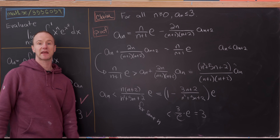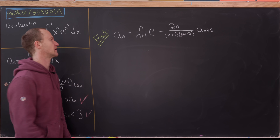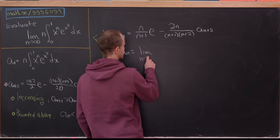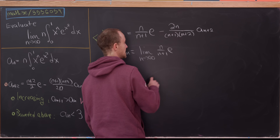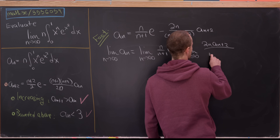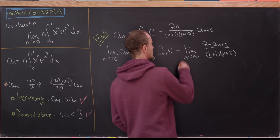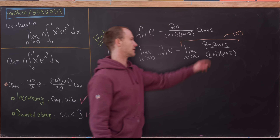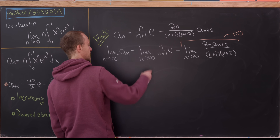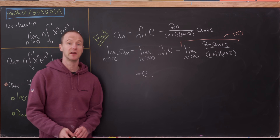We've proven the sequence has a limit by the monotone convergence theorem. Now let's compute it using the recursion. Taking the limit as n goes to infinity of a sub n equals the limit of n over n plus 1 times e, minus the limit of 2n times a sub n plus 2 over ((n plus 1)(n plus 2)). The second term goes to 0 because a sub n plus 2 is bounded and the rational factor goes to 0, while n over n plus 1 tends to 1. So the whole thing tends to e, and that's a good place to stop.